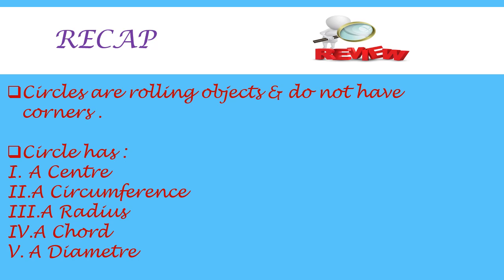Now let's quickly revise what we have done in today's class. Circles are rolling objects and do not have corners. A circle has a center, a circumference, a radius, a chord, and a diameter.